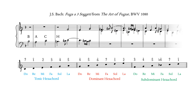Here are the hexachords from the key of D minor. The names of the notes in the German language actually come from these hexachords. In German they use the same note names A through G that we do in English, but they also go one further and add the note name H for the note we would call B natural.